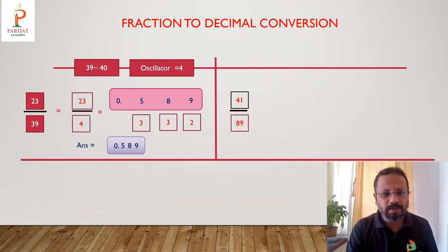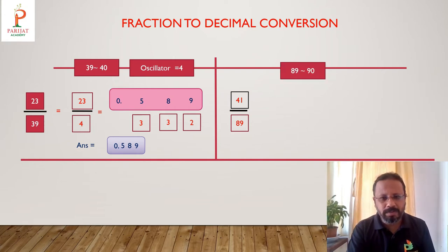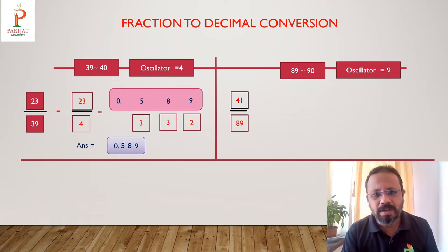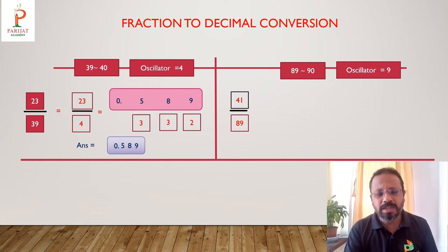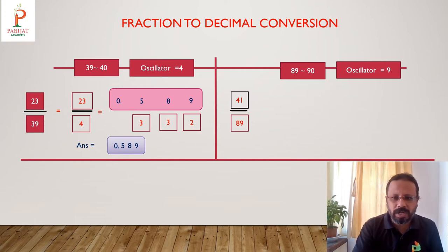Now let's try 41 upon 89, which is again a difficult fraction by the school method. The nearest round figure to 89 is 90, so the osculator will be 9.